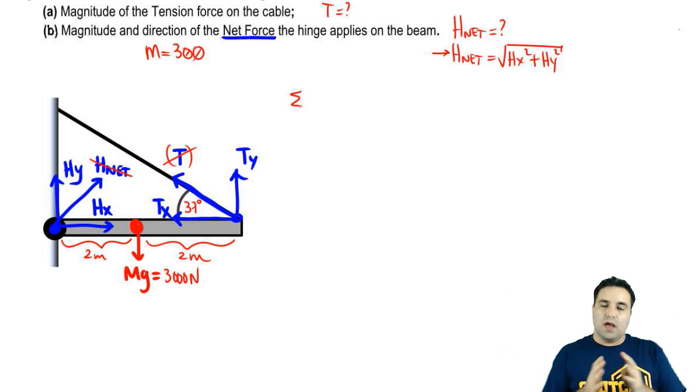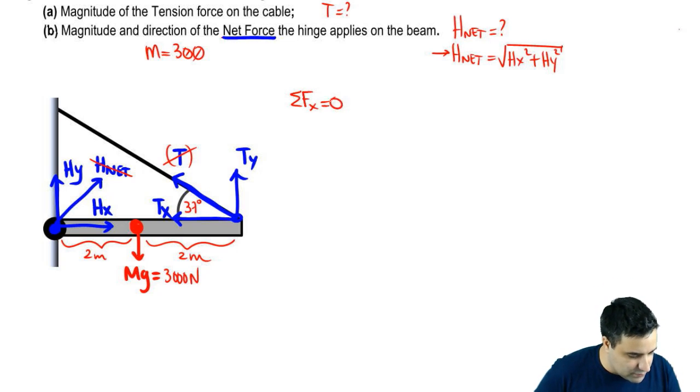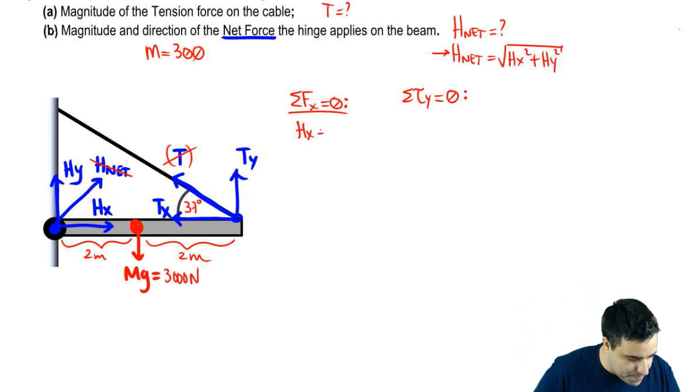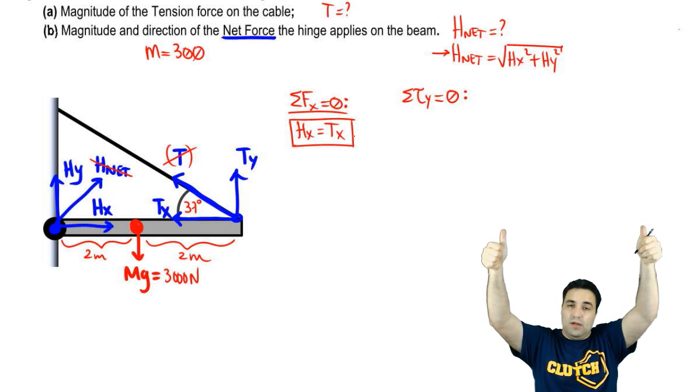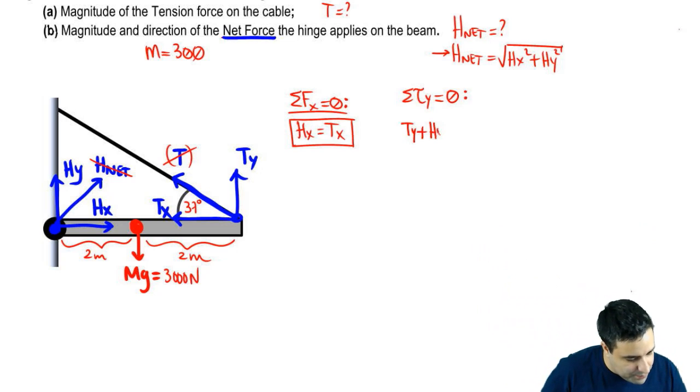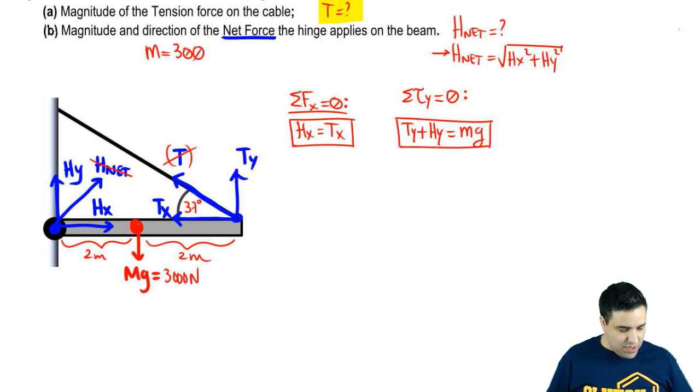As with any complete equilibrium questions, I'm going to start by writing sum of all forces equals zero, sum of all torques equals zero. So sum of all forces in the x-axis equals zero, sum of all forces in the y-axis equals zero. And there are only two forces in the x-axis. I have Hx, Tx. They cancel so I can write that one equals the other. Hx equals Tx. And on the y-axis, I have two forces going up, and that's going to cancel with the one force going down. So Ty and Hy going up equals mg. Ty plus Hy equals mg.